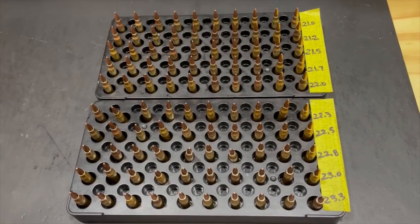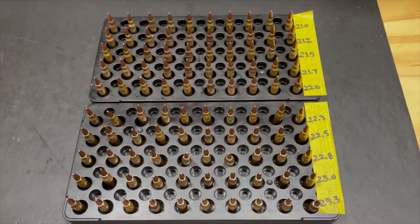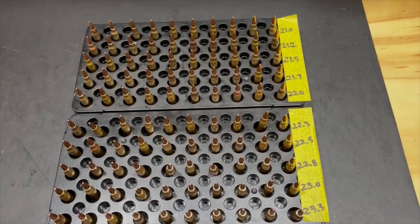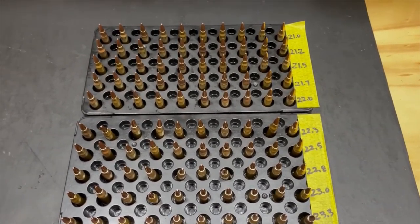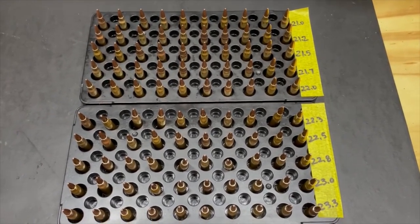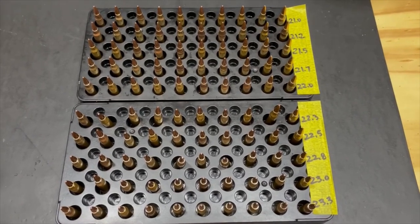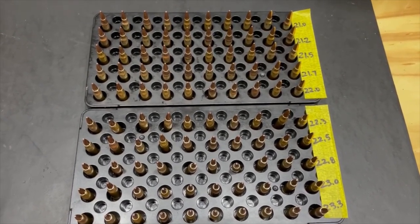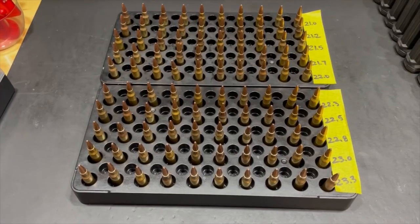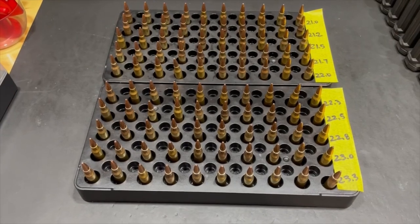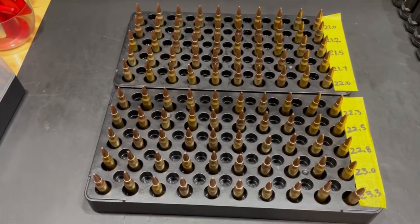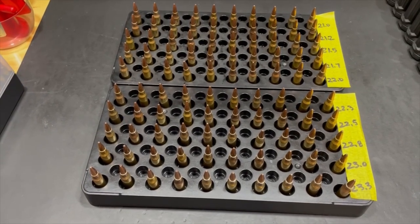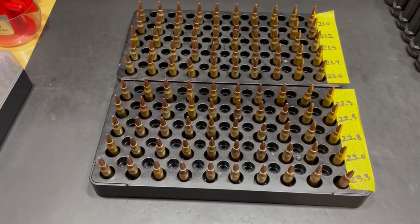So there we have 100 rounds loaded and ready to go. Now, if we were going to be shooting these through a semi-automatic rifle like an AR, there would be one additional step. We would want to go back and crimp these to help secure the bullet into the case. That would help with feeding and avoid possible jams if you're using a semi-auto. But in this case, I'm going to be shooting these through my Ruger American .223 bolt-action rifle. So there's no need to crimp these.